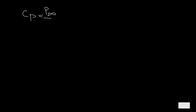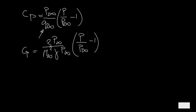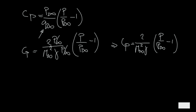We also have a relation for a in terms of gamma, p, and rho: a-infinity squared equals gamma times p-infinity divided by rho-infinity. Combining these gives q-infinity equals half M-infinity squared gamma p-infinity. Substituting into the Cp expression and simplifying, since p-infinity appears in both numerator and denominator, we get Cp equals (2 divided by M-infinity squared gamma) times (p divided by p-infinity minus 1). For the p divided by p-infinity term, we can use the isentropic relations.